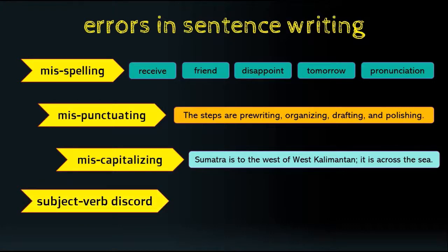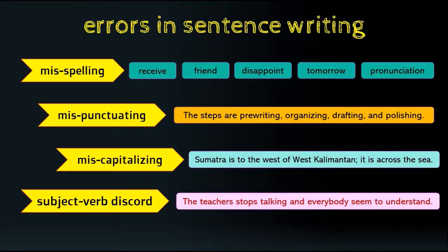The fourth error is subject-verb discord, which is a grammatical problem — the subject and verb do not agree with each other. For example: 'The teacher stops talking and everybody seems to understand.' In the present simple, plural subjects must be followed by a verb without the suffix -s or -es, while singular subjects require -s or -es. 'Teachers' is plural so 'stops' is wrong, while 'everybody' refers to an individual so it does need the -s.